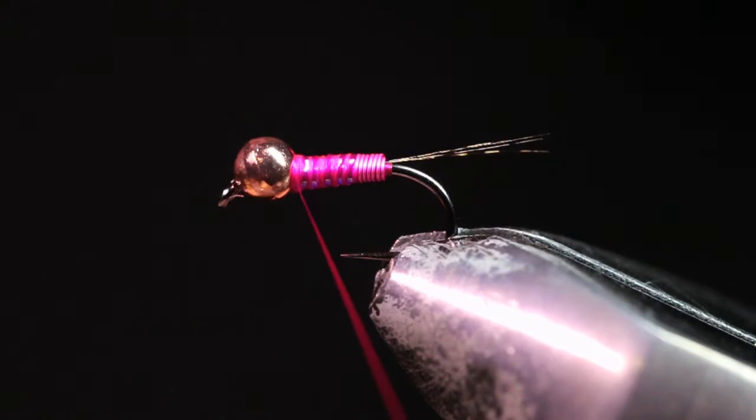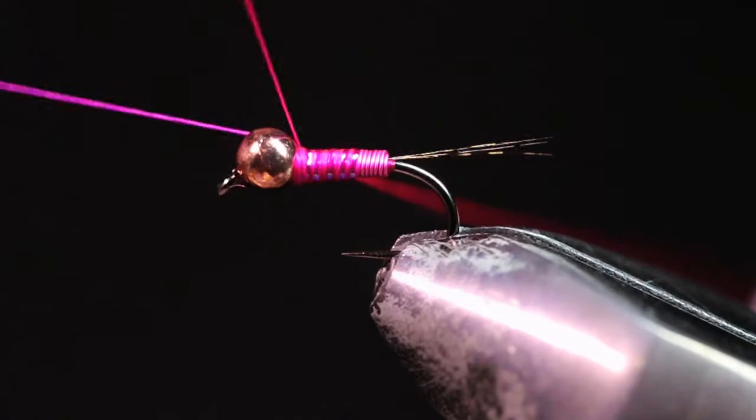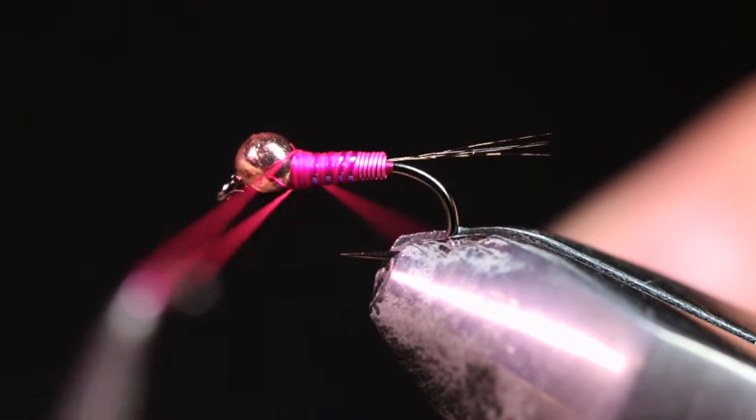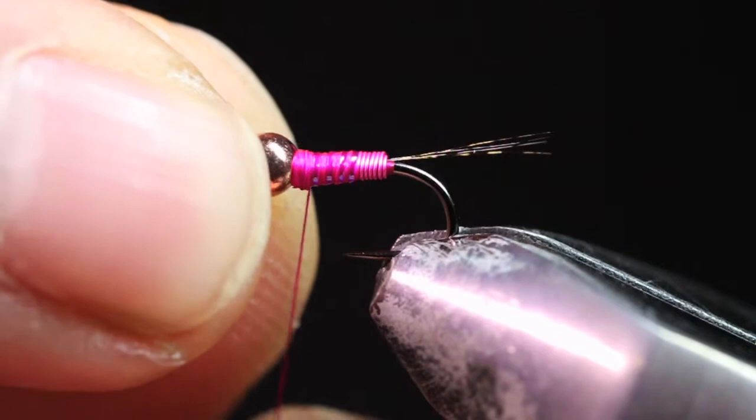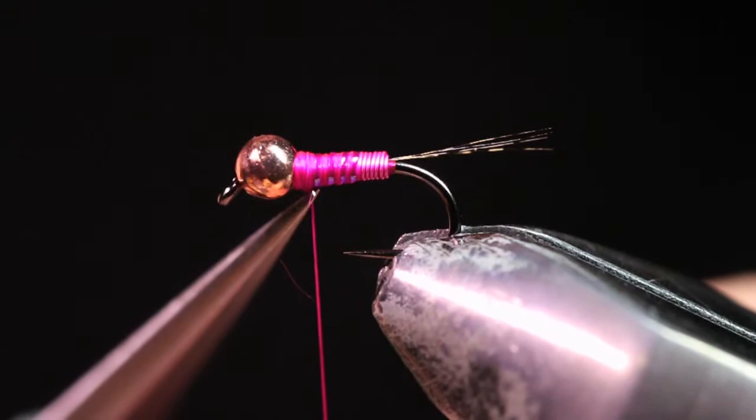Now at this point you can just grab your whip finish tool and throw in a nice four or five turn whip finish. You can just cut out your thread.